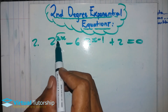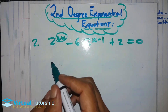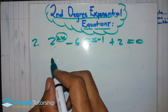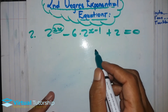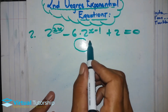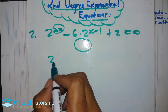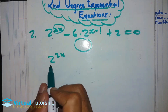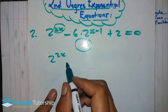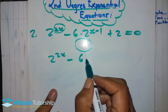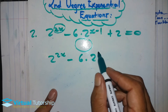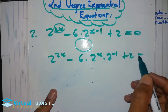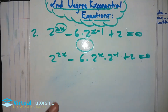Why? Because you know, exponent 2x is in one of the terms. So you'll end up in a quadratic equation. The long is: 2 exponent 2x, and there's nothing you can do with the x just yet. Minus 6 times 2 exponent (x minus 1), plus 2, is equal to zero.